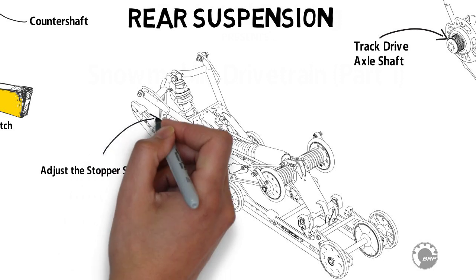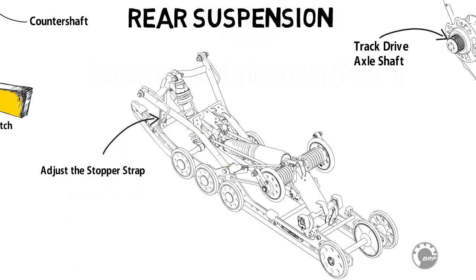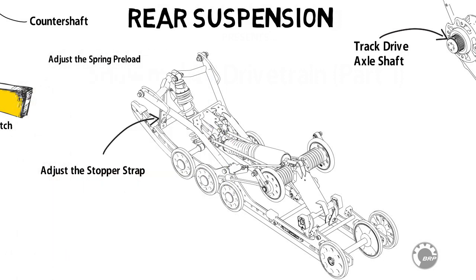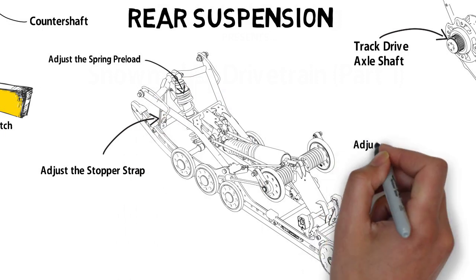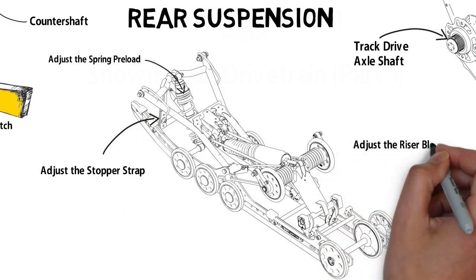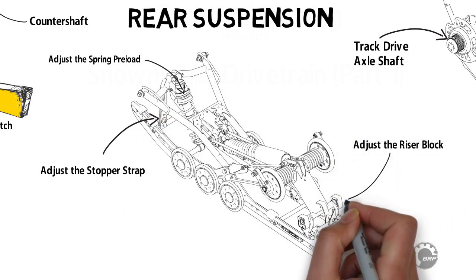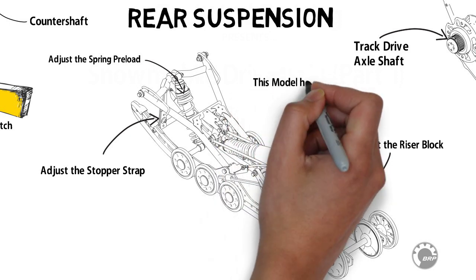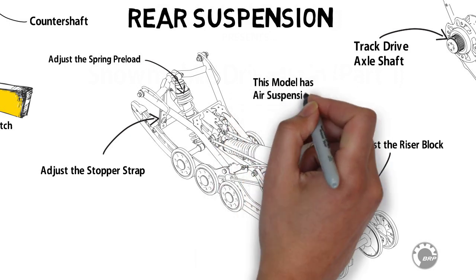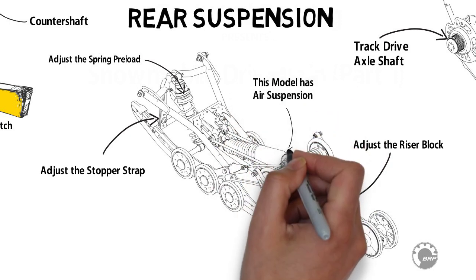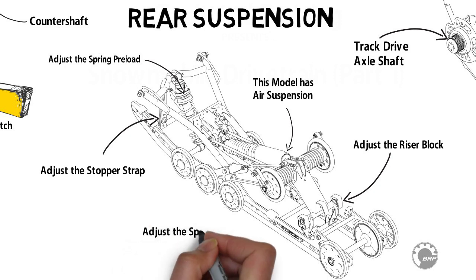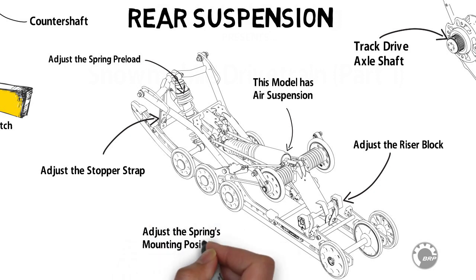Engine torque is then conveyed along the track to the suspension, close to the rear axle, to produce forward traction. It is important to recognize that a snowmobile suspension system is not merely a means of providing good ride characteristics — it's also an essential part of the drivetrain.